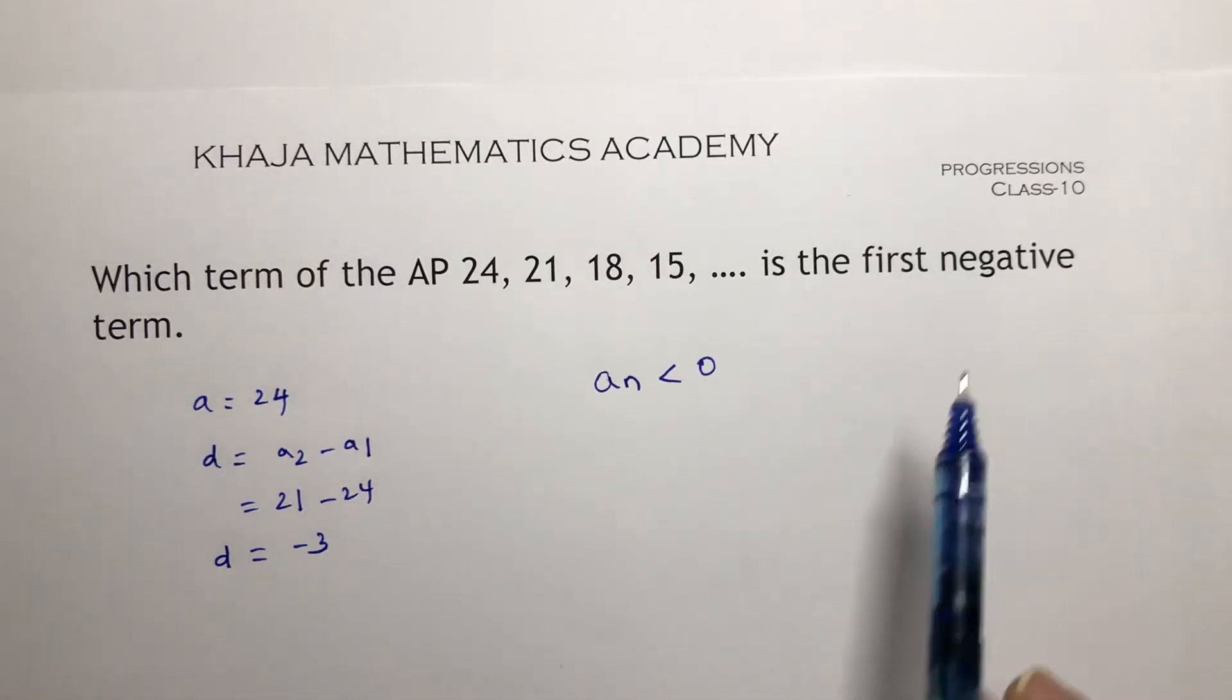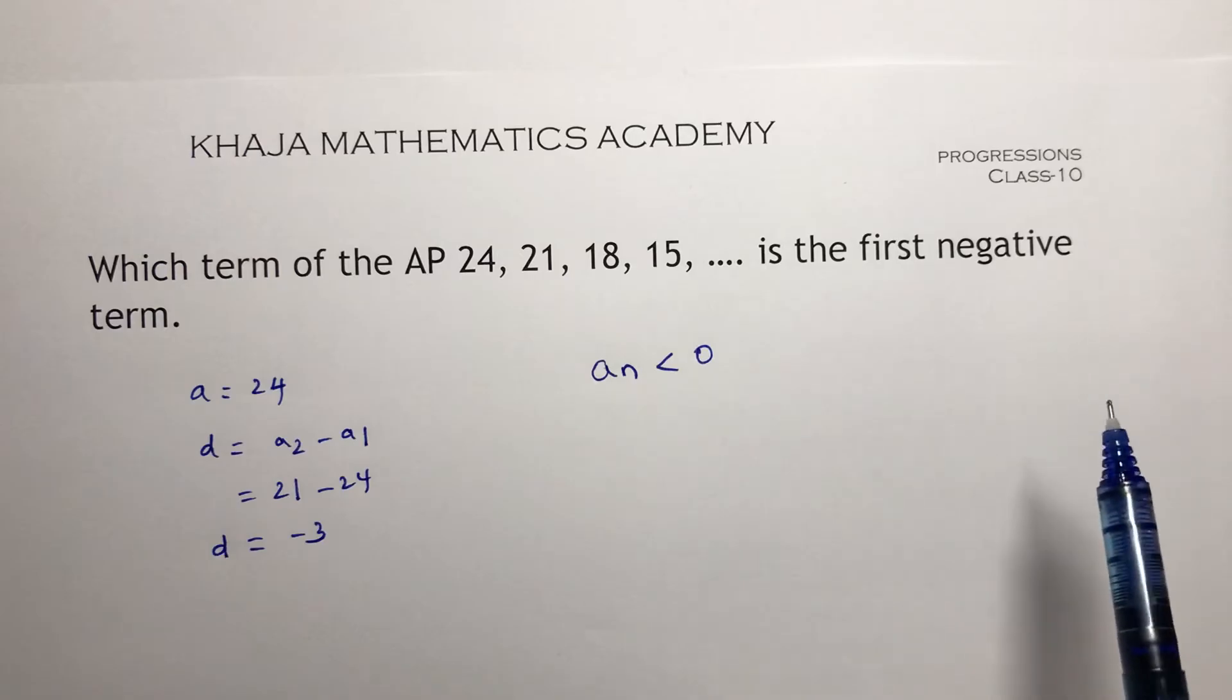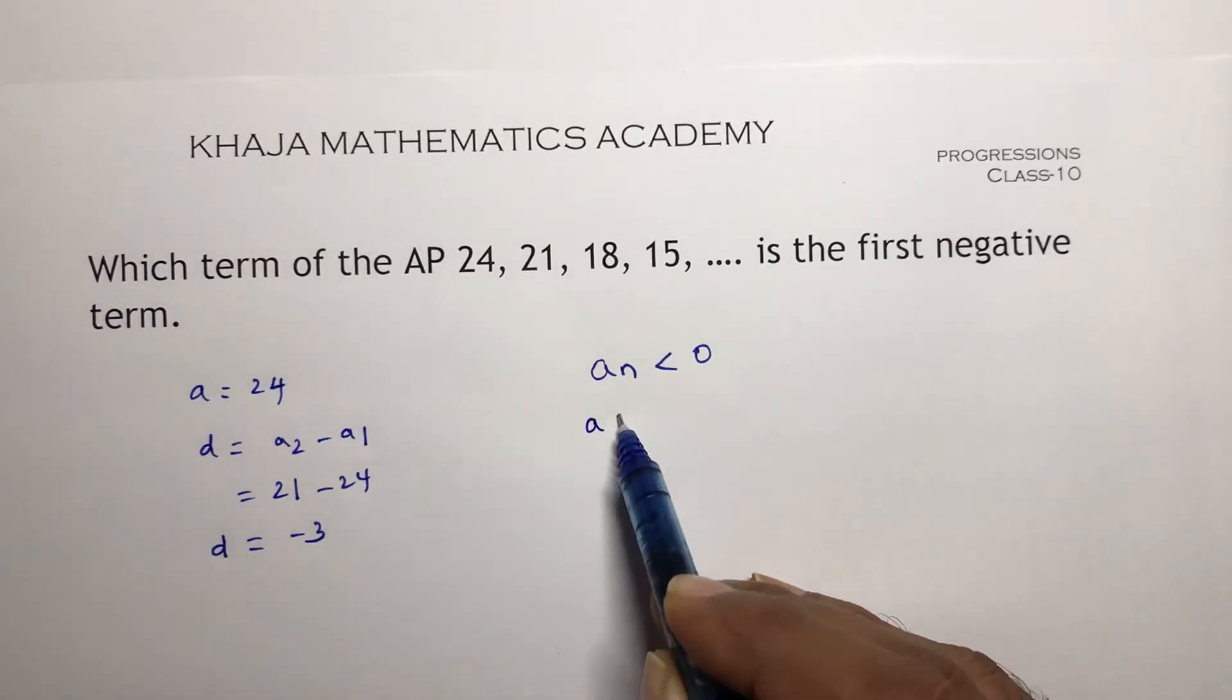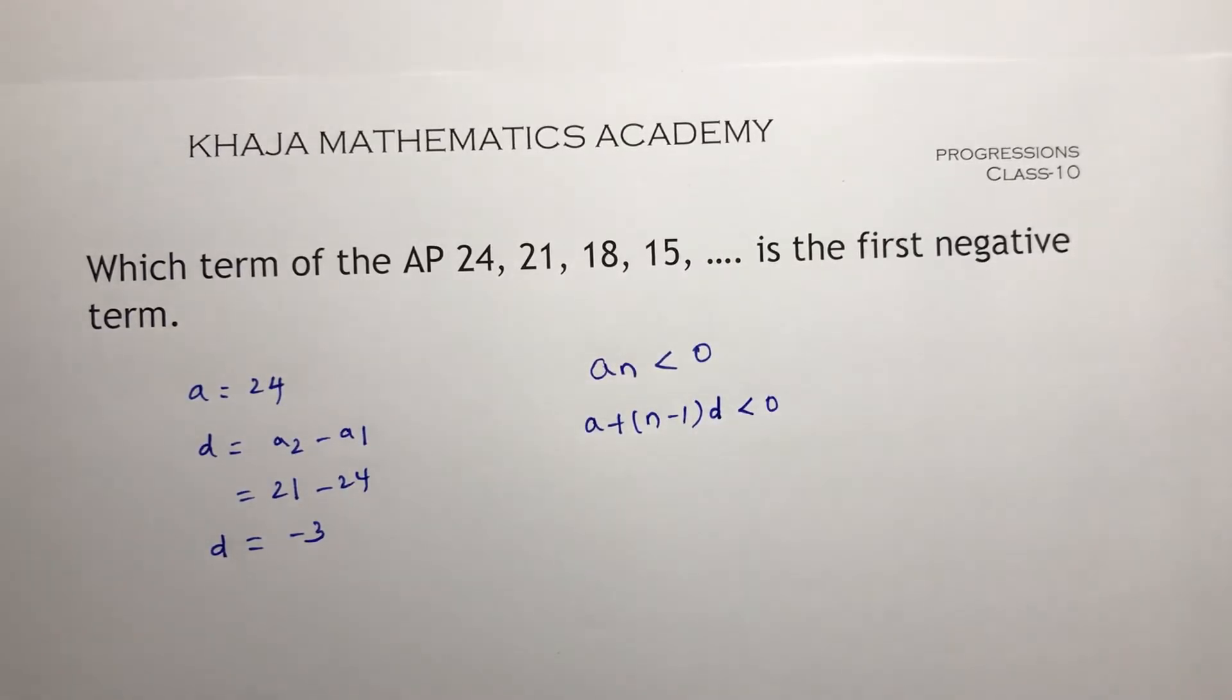So first negative term is an less than 0. If they will say positive term, suppose, then an greater than 0. So an formula is a plus n minus 1 into d less than 0.